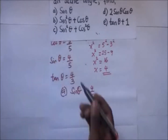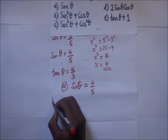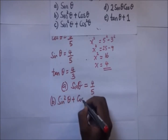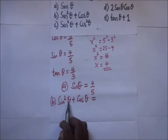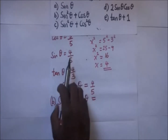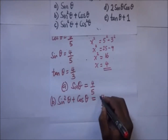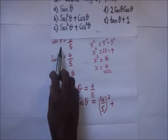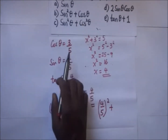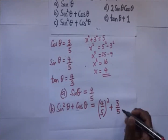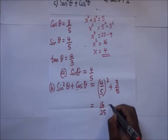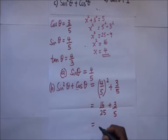Part b: sine squared theta plus cos theta. It is just a matter of substituting. Sine squared theta means sine theta squared, which is four over five squared, plus cos theta which is three over five. That gives us sixteen over twenty-five plus three over five.